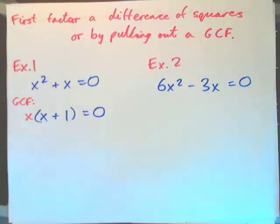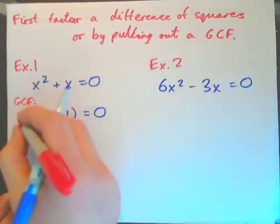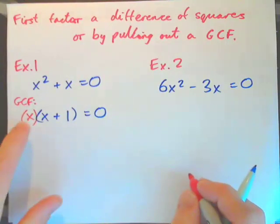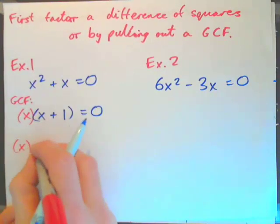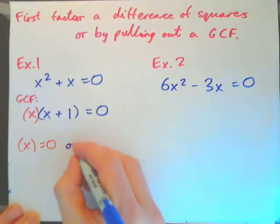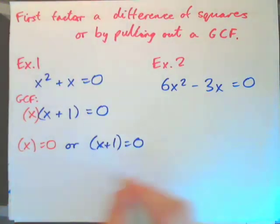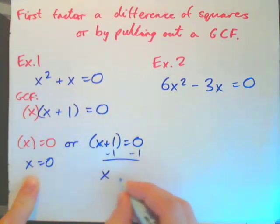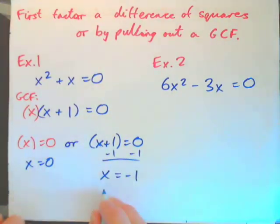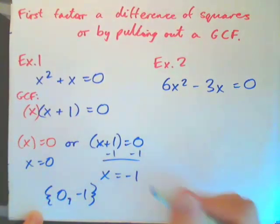So if we pull an x out: x times x gives x squared, x times positive 1 gives x. So I have x times (x plus 1) equals 0. Use the zero product rule: either x equals 0, or x plus 1 equals 0. Subtract 1 from both sides for the second equation and I get x equals negative 1. So the solution set is {0, −1}.